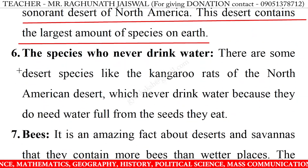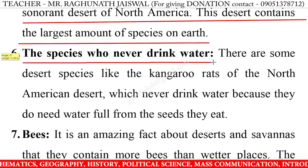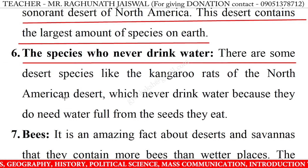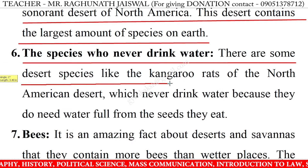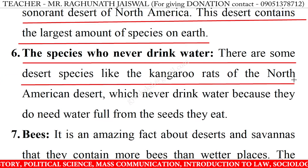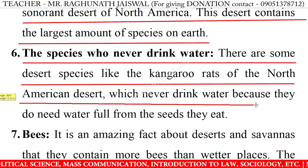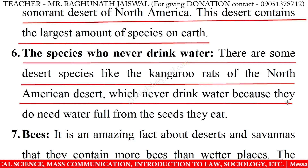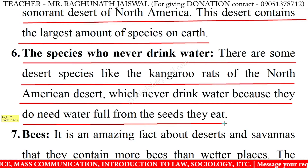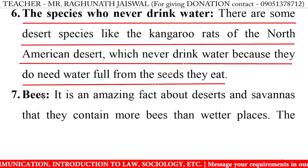This desert contains the largest amount of species on earth. 6. The species who never drink water: There are some desert species like the kangaroo rats of the North American desert which never drink water because they get all the water they need from the seeds they eat.